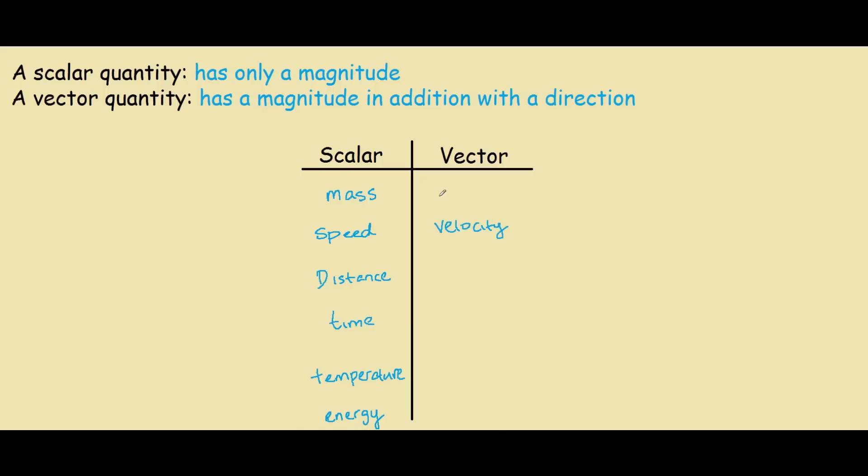For mass, we would have weight. Instead of distance, we would have displacement.